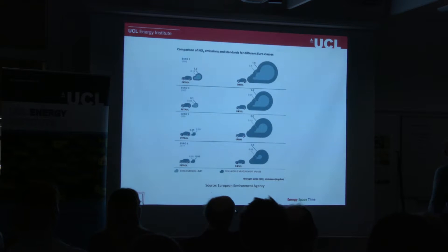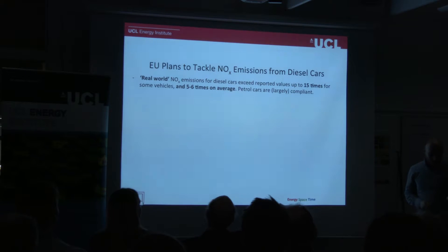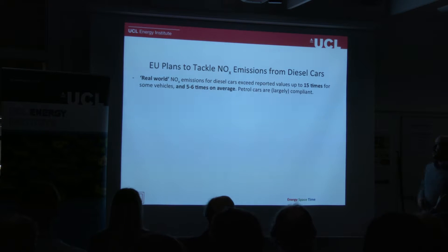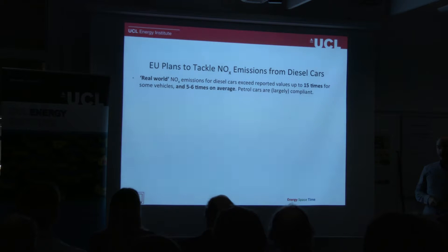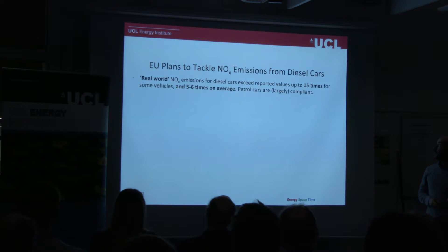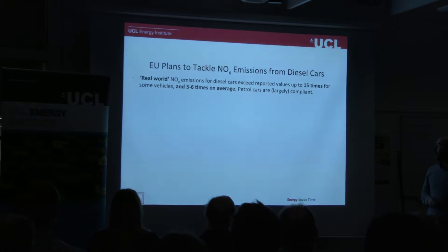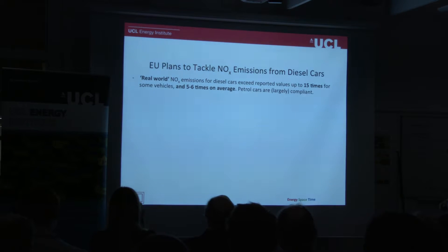Introducing economist Paul Drummond. At present, real world NOx emissions from diesel cars exceed reported values — the actual 80 milligrams per kilometre for NOx — by up to 15 times for some vehicles, on average about five to six times. Petrol cars, as Claire said, are largely compliant with the regulations in their real world emissions.